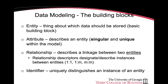An attribute that can be used to uniquely distinguish every instance of an entity is referred to as an identifier, and in some cases attributes are joined together to create identifiers. Finally, relationships are used to describe the linkage between two entities. There are several types of relationships that can exist between entities, such as one-to-one, one-to-many, and many-to-many.